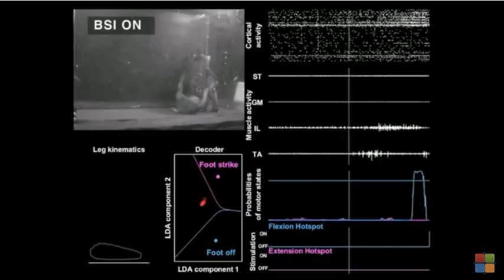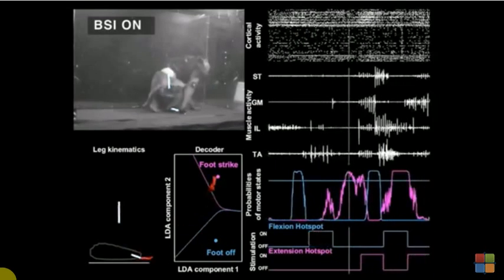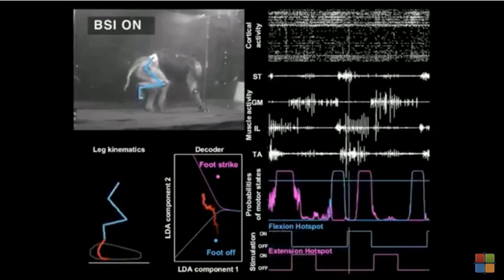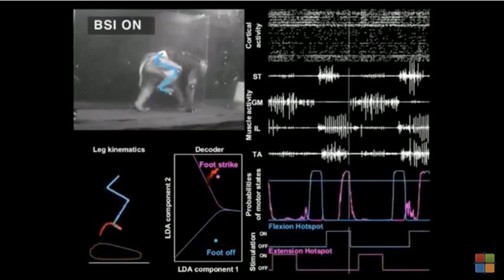The decoder anticipated the first step of the monkey prior to the occurrence of any leg movement and instantly resumed the modulation of leg movements.